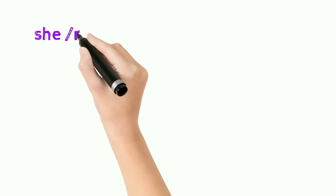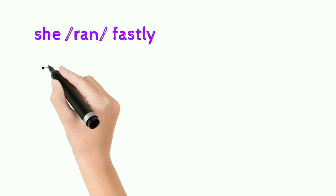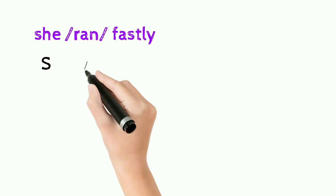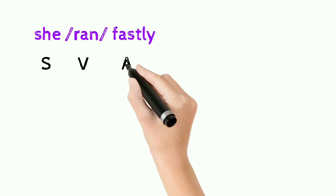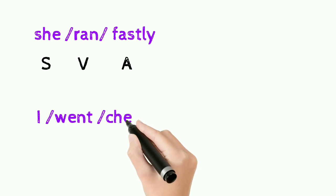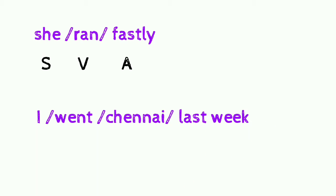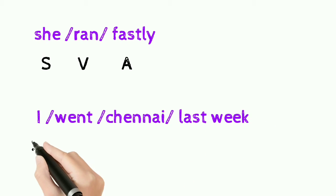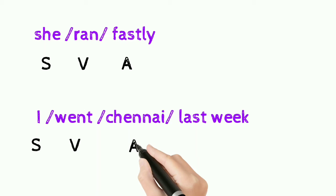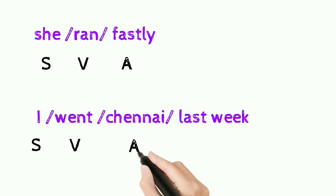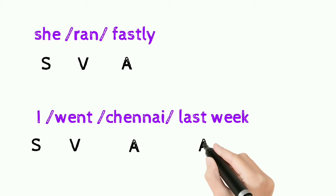Example: 'She ran swiftly.' She is the doer of the action, so that is the subject. The action done by her is 'ran.' How did she run? — swiftly, which answers the question 'how' and ends with L-Y, so that is an adjunct. Next: 'I went to Chennai last week.' 'I' is the subject and 'went' is the verb. Where did I go? — Chennai, so that answers 'where' and is an adjunct. When did I go? — last week, which answers 'when,' so that is also an adjunct. This gives the pattern S-V-A-A.